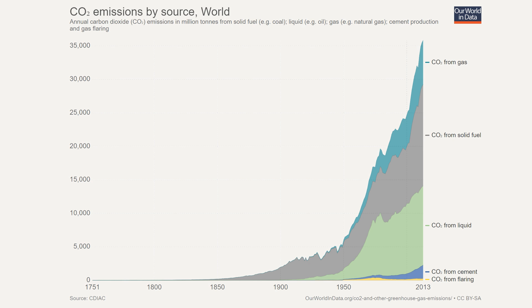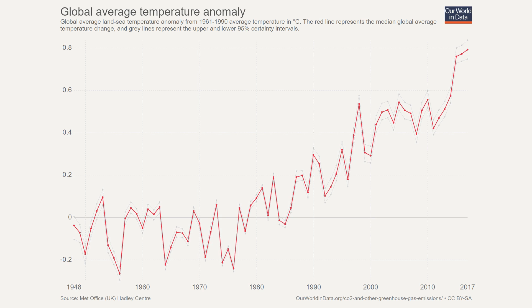The increasing amount of CO2 in the atmosphere has resulted in what is called the greenhouse gas effect, which has led to an increase in global average temperature. This graph shows that average temperature has been increasing since the 1950s, by almost one degree over the last 60 years.